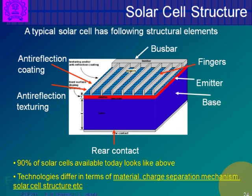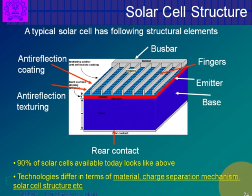There is anti-reflection texturing. If you do not do this, absorption will be less. Your first job is to absorb everything possible — it should not reflect and it should not transmit. The third possibility is absorption, and for that people do texturing. Texturing alone is not enough to reduce reflection, so people also do anti-reflective coating, ARC.